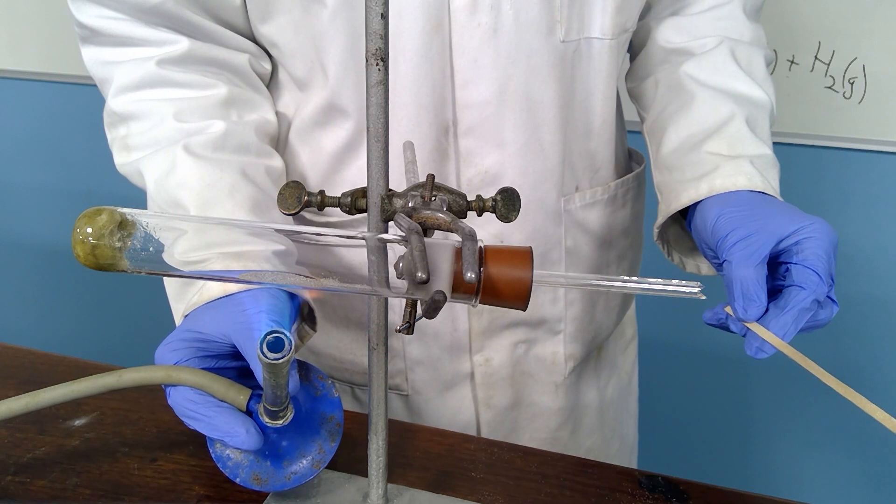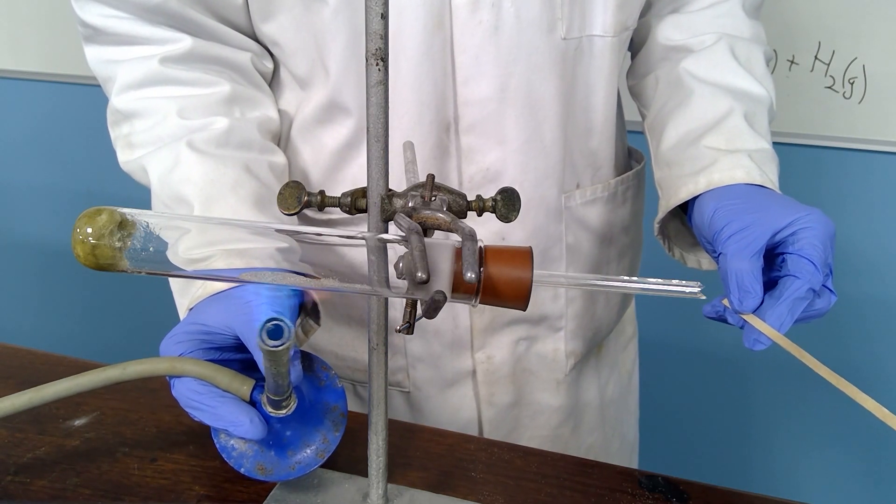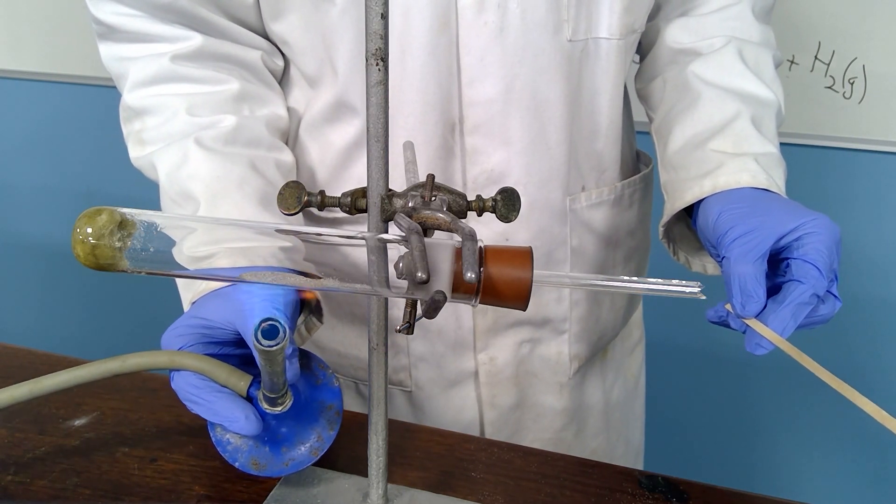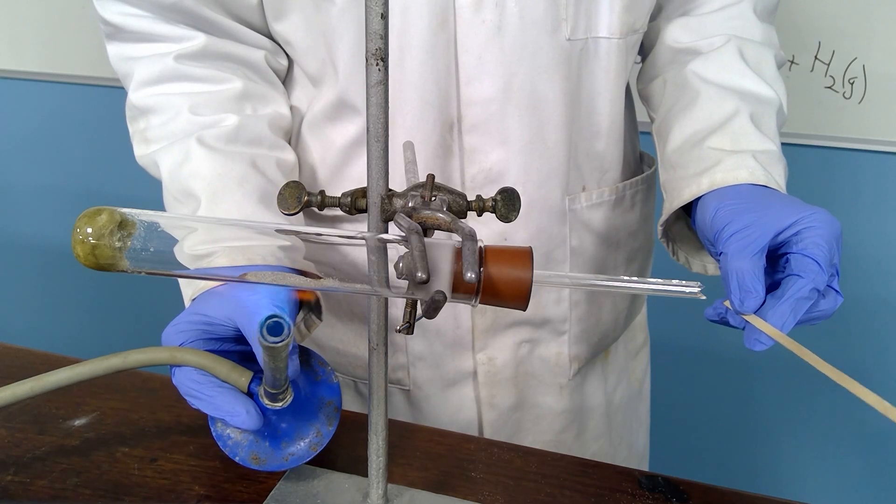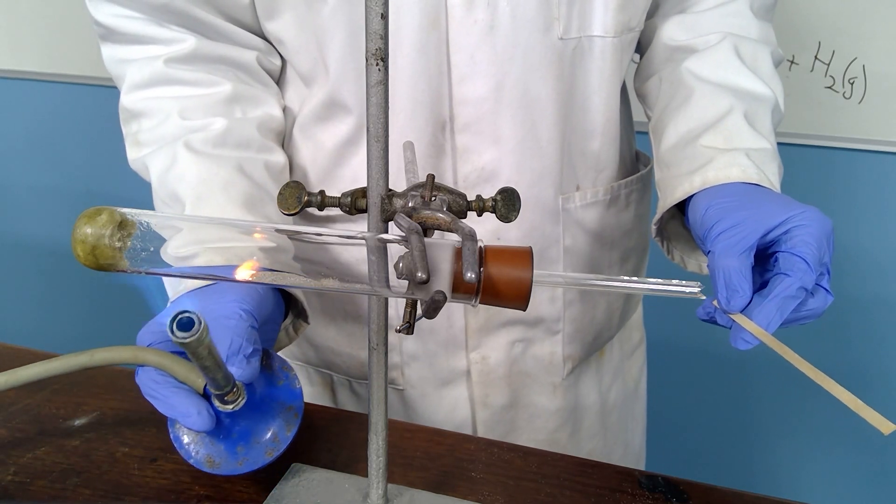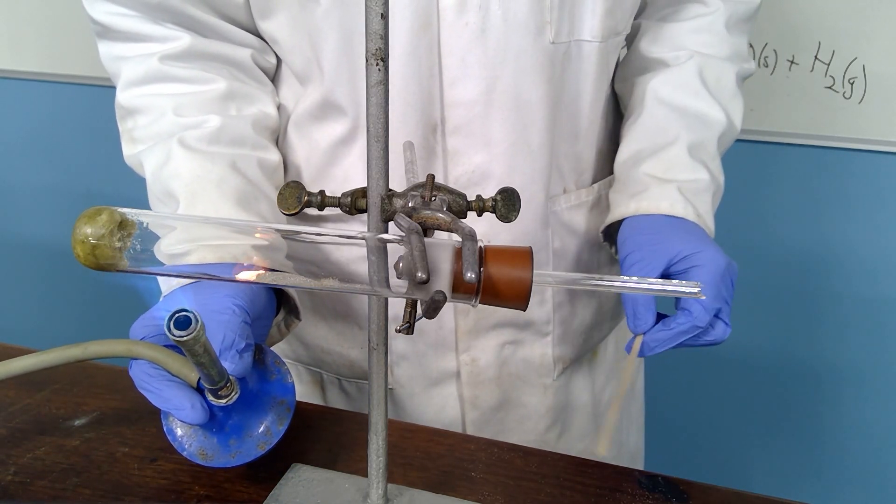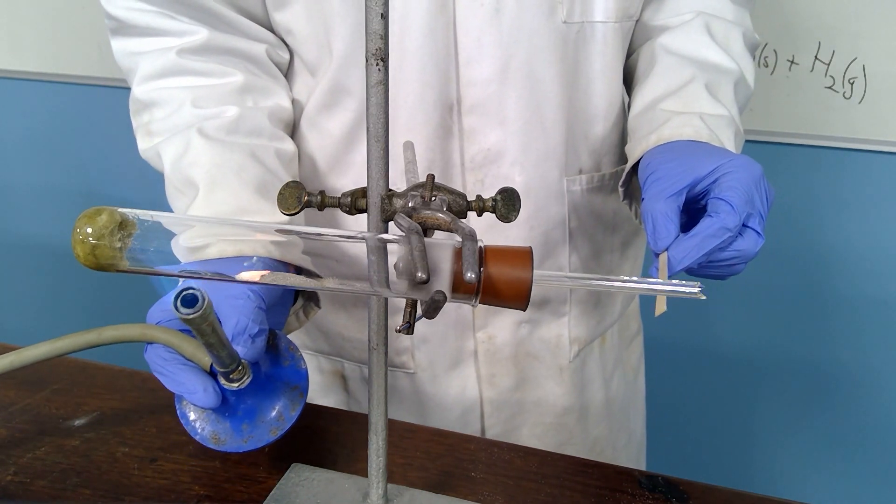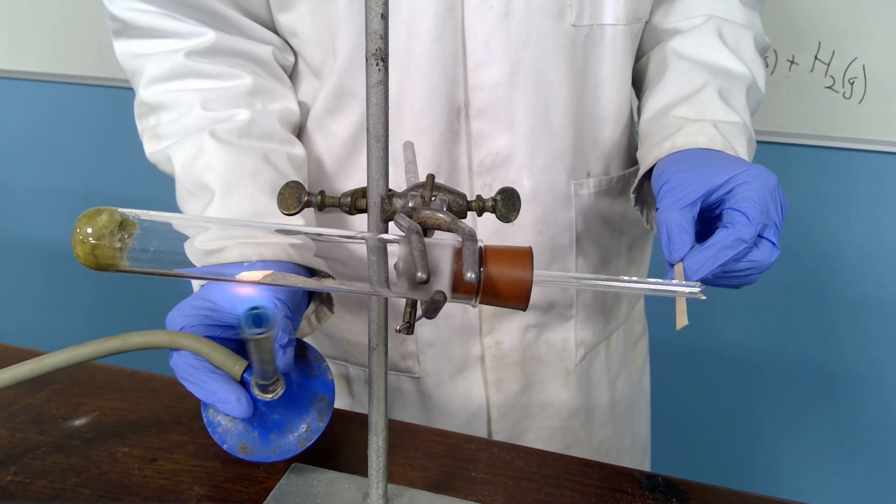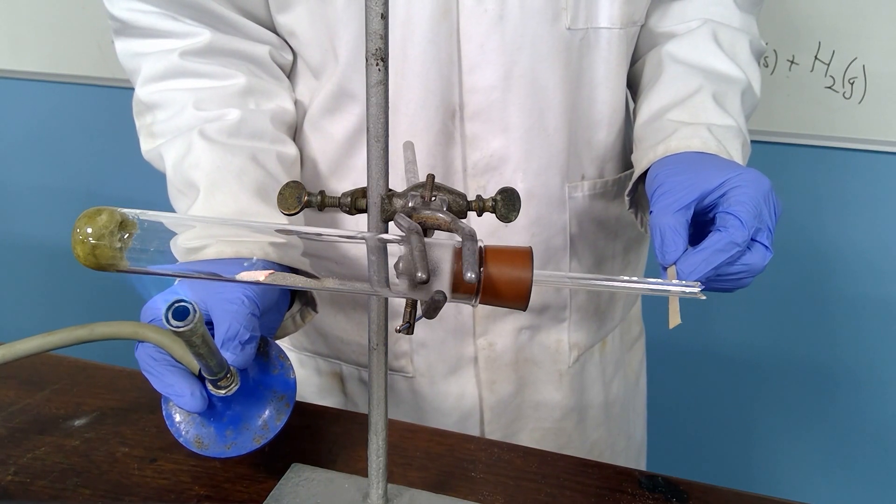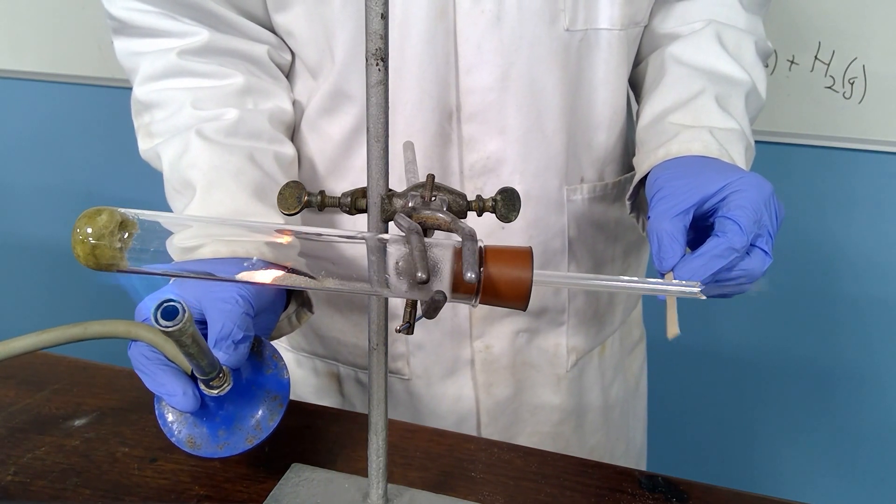As soon as I feel that the magnesium is hot enough, I will move the Bunsen down to the other end and start to vaporize some of the water. As I vaporize the water, a chemical reaction occurs. And there it goes.